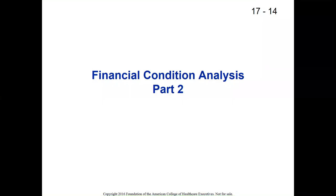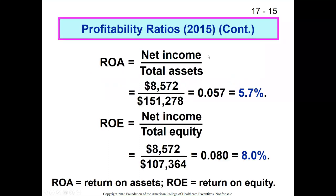This is part two of my lecture based on Gipinski's Chapter 17, Financial Condition Analysis. The first couple of ratios we're going to look at for profitability measures are return on assets (ROA) and return on equity (ROE).